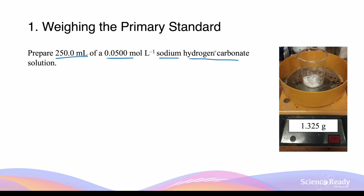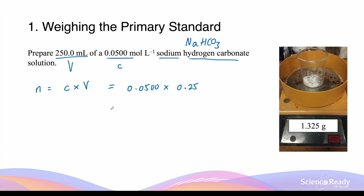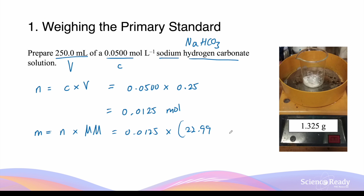Let's say we want to prepare a 250 mL solution with a concentration of 0.0500 mol/L of sodium hydrogen carbonate, NaHCO₃. The first step is to weigh out the sodium hydrogen carbonate in solid form. We know the volume and concentration, so by multiplying them together we calculate the number of moles: 0.0500 × 0.25 L = 0.0125 mol of NaHCO₃.